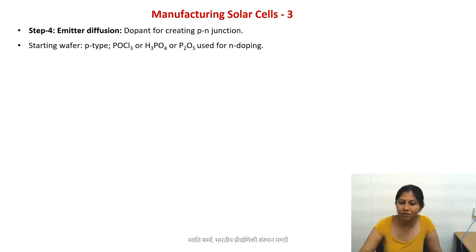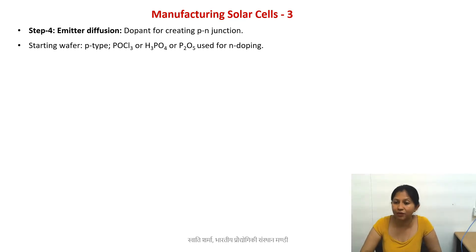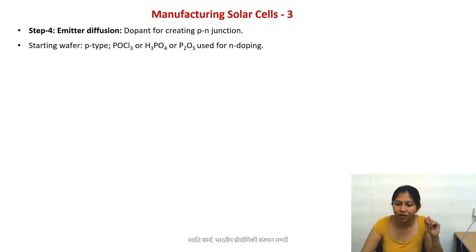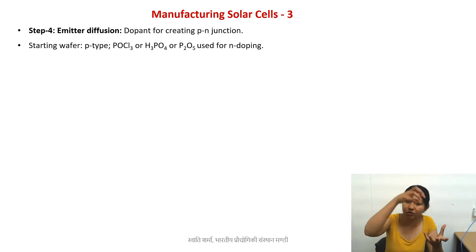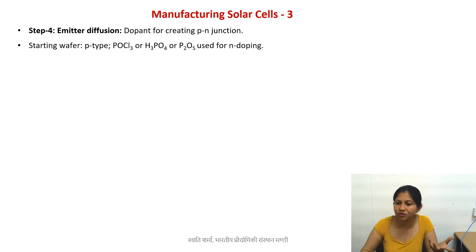Our starting wafer in industrial processes is a P-doped wafer. P-doped wafer means it is doped with boron. Now what we need is an N-doped layer of N-type silicon material. So what we do is we take the same P-doped wafer and try to diffuse some phosphorus-containing material. Phosphorus is the precursor for N-doping.